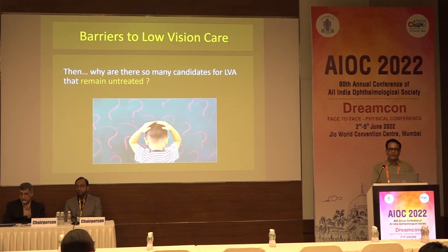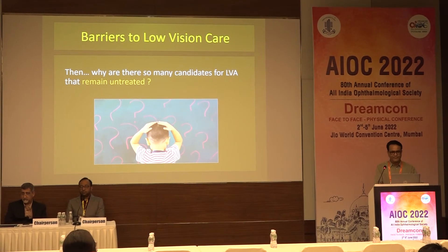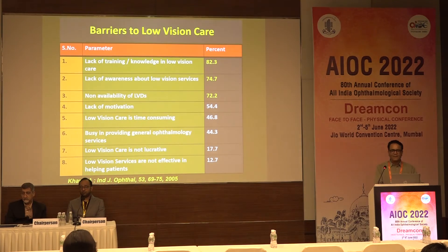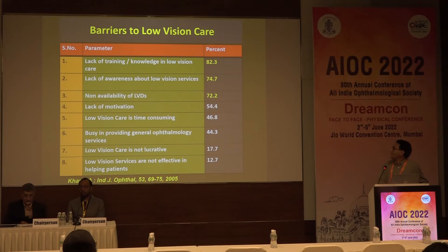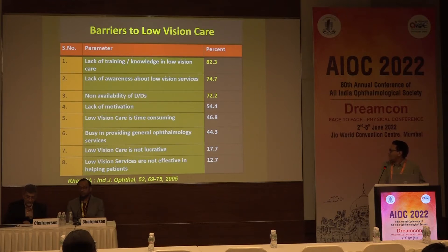The question is: why do so many patients go untreated? The answer is because there are so many barriers to low vision aid treatment. These include lack of training, lack of awareness about low vision services, non-availability of low vision devices, lack of motivation, and the fact that low vision care is time-consuming. Most ophthalmologists are busy in cataract practice and general practice, and low vision care is not considered lucrative.